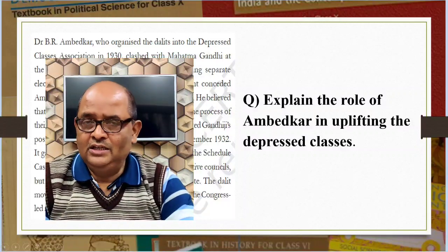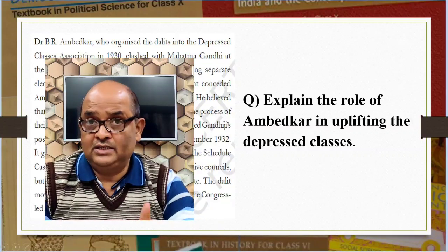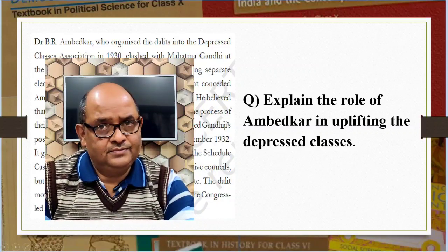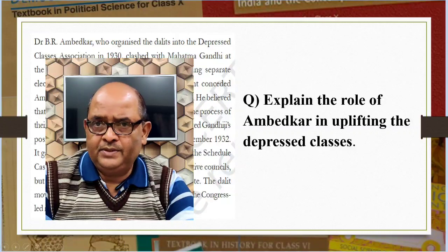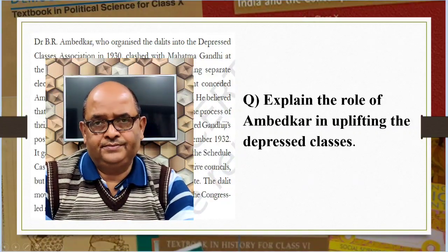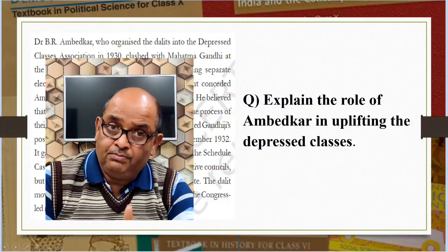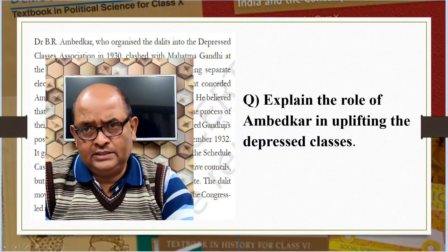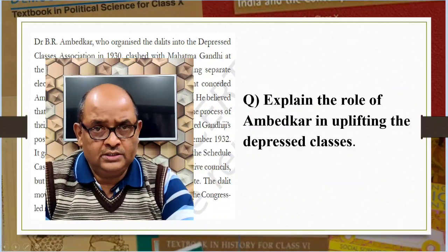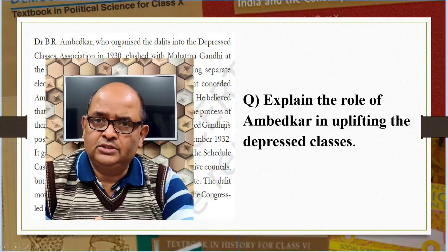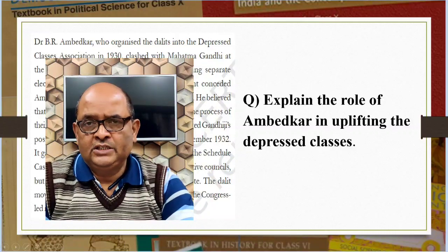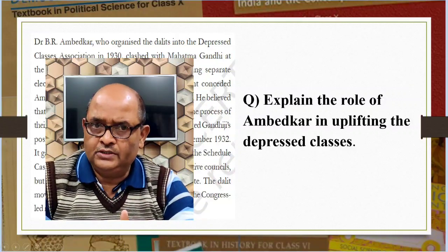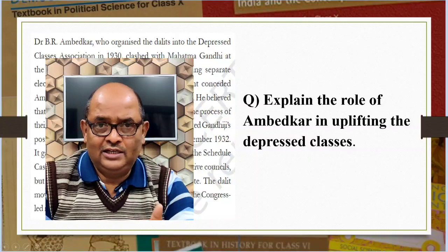Explain the role of Ambedkar in uplifting the depressed classes. In 1930, Ambedkar entered national politics. In the same year, he organized the Depressed Classes Association to make them politically stronger. He was of the opinion that only political empowerment would resolve the problems of social justice. Due to his efforts, they began organizing themselves, demanding reserved seats in educational institutions and a separate electorate that would choose the Dalit member for legislative councils. He was nominated as a delegate of the oppressed classes for the Second Round Table Conference. In that conference, he clashed with Mahatma Gandhi by demanding a separate electorate for Dalits.